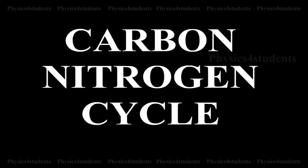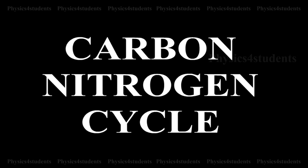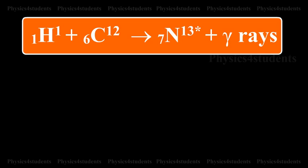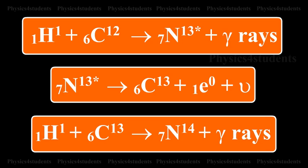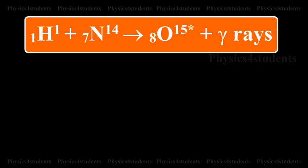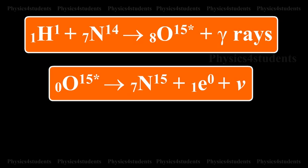Carbon-Nitrogen Cycle. The following cycle of reactions takes place in the Carbon-Nitrogen Cycle, in which Carbon acts as a catalyst.